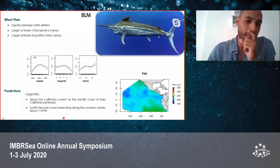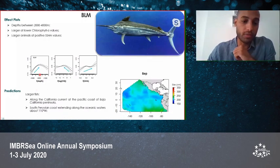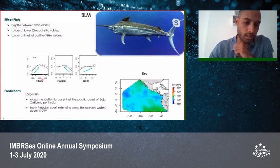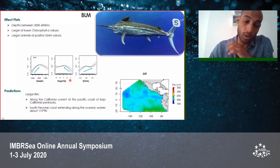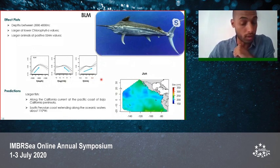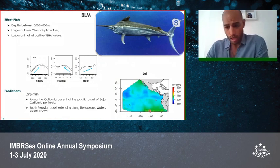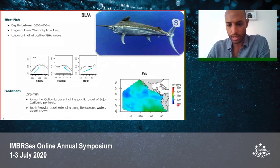The black marlin showed a response with large individuals occurring in areas with depths around 3,000 meters, lower chlorophyll-a values, and higher sea surface height anomaly values. The predictions for this species showed a concentration of large individuals mainly in the southeastern part of the study area, with some large individuals also present in the California Current.